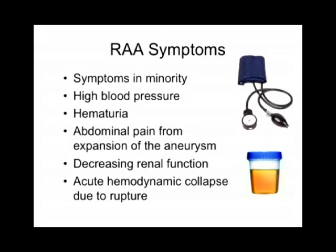Hypertension can occur. Sometimes patients have underlying essential hypertension, but if there is compression of a renal artery branch by the aneurysm, that can result in renovascular hypertension. In patients with microembolization of thrombus, there may be parenchymal damage and hypertension as a result. Patients with embolization may present with hematuria. In rare cases, there may be abdominal pain associated with expansion of the aneurysm or embolization. There can be decline in renal function, or if a patient presents with rupture, acute hemodynamic collapse.